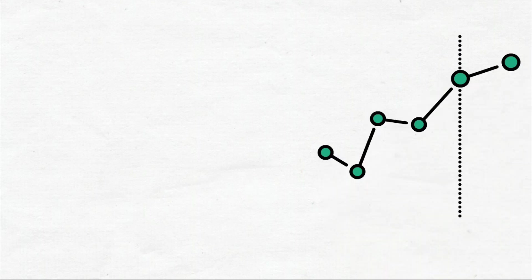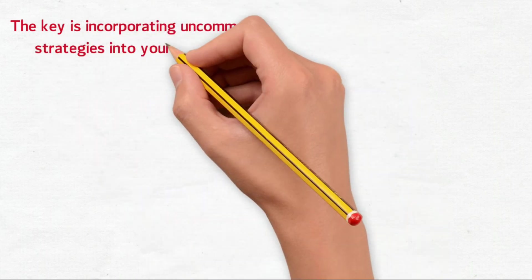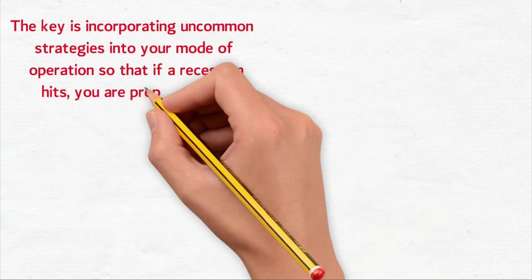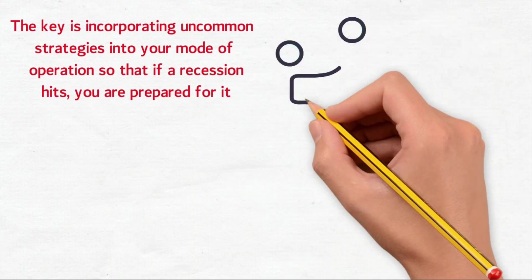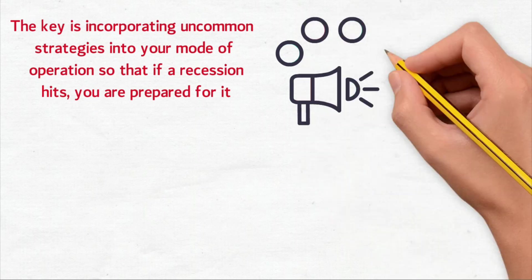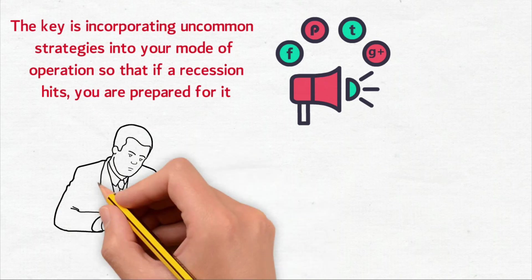The economy is in a constant state of change. New highs can become new lows overnight, and this volatility can instill fear about the oncoming recession. Online business owners are not immune to economic downturns, but there are concrete actions that you can take to secure your business ahead of time. The key is incorporating uncommon strategies into your mode of operations so that if a recession hits, you are prepared for it. If you spend ample time on social media, a quick scroll through your newsfeed will have you anxiously gripping your computer mouse and googling ways to recession-proof your business.